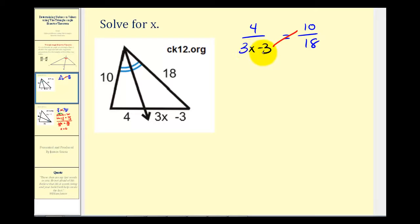So we have 10 times 3X minus 3 equals 4 times 18, which gives us 72. Distribute the 10. So we'll have 30X minus 30 equals 72.